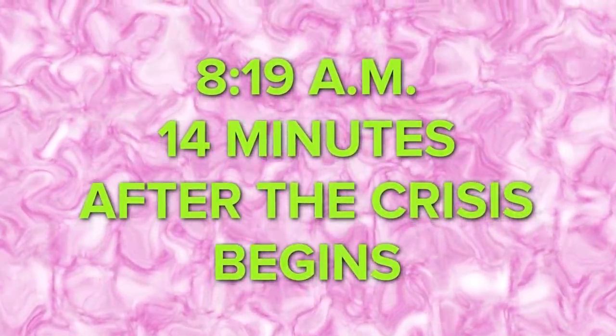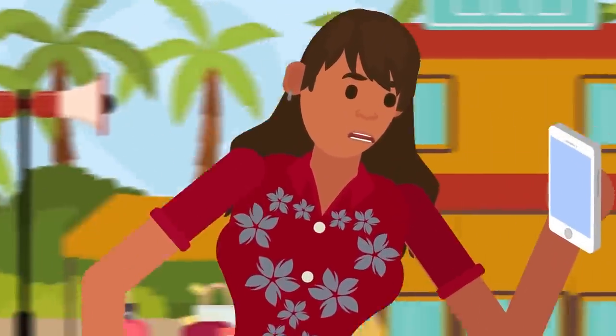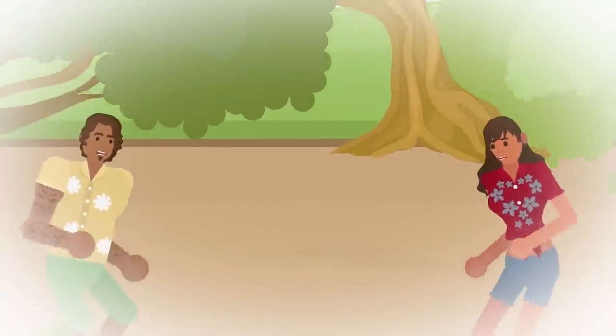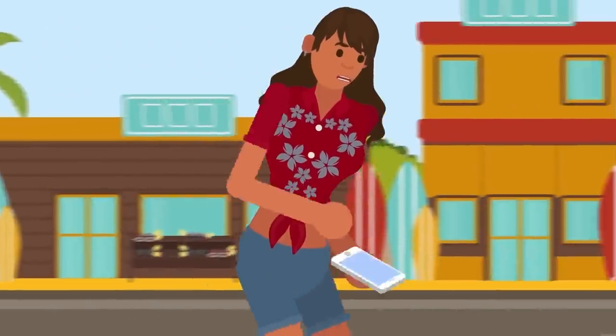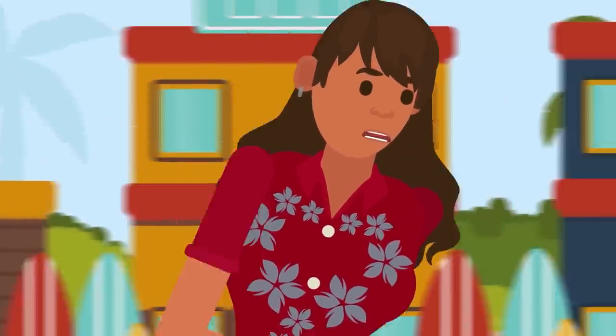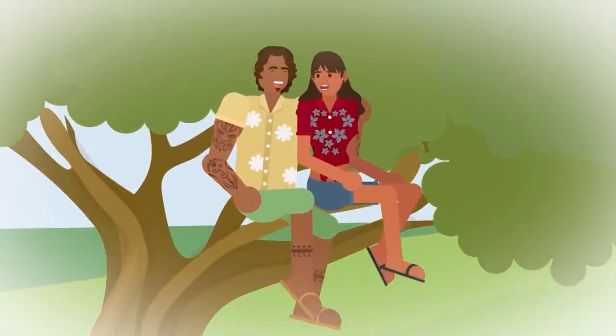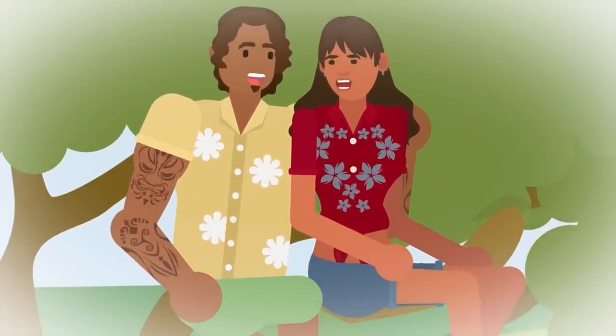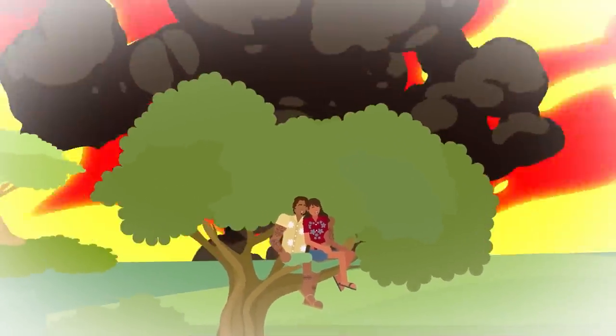8:19 AM, 14 minutes after the crisis begins. Kai feels her phone vibrate in her pocket. She ignores it. The only thing that matters is reaching Fort DeRussi Park, where she will be reunited with Lono. She can see the waves crash against the stone breakers jutting out from the shore. The salty mist from the ocean wisps against her face. The park is only a block away now. She spots the gnarled roots of one of the banyan trees just ahead. She thinks back to one of the first dates she went on with Lono, where they climbed this very tree and talked for hours. This is where she will find her husband and they can be together, even if it is the end of the world.